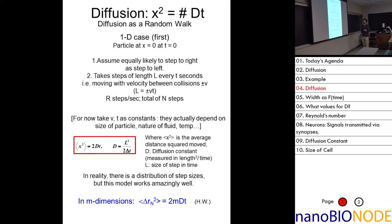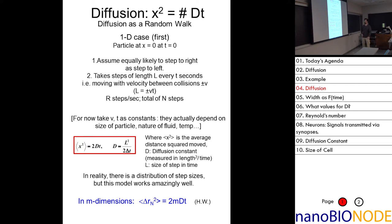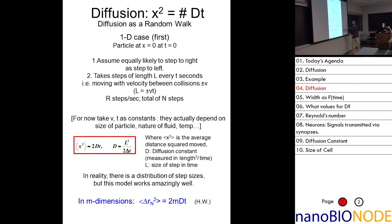H₂O and small molecules undergo a random walk — they're moving very fast but the direction of motion changes very often. And x-squared equals 2DT where D is L-squared over ΔT — L being the length between collisions and ΔT the time between hits. For homework: in n dimensions, for one dimension x-squared = 2Dt, for two dimensions x-squared = 4Dt, and for three dimensions x-squared = 6Dt.